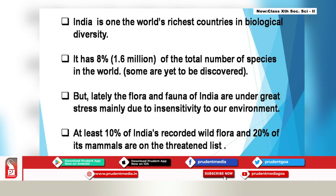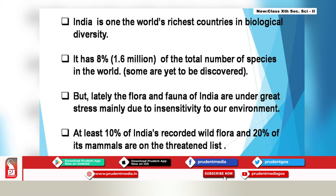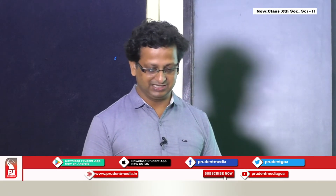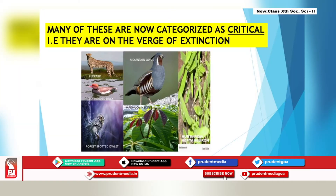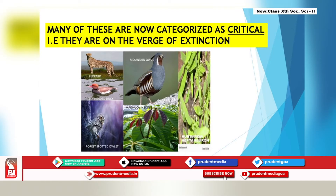India has lots of variety of plants and animals, and is one of the richest countries in biological diversity. It has 8% — that is 1.6 million — of the total number of species in the world, some yet to be discovered. But lately our flora and fauna has come under great stress, and many species have even been categorized as critical.